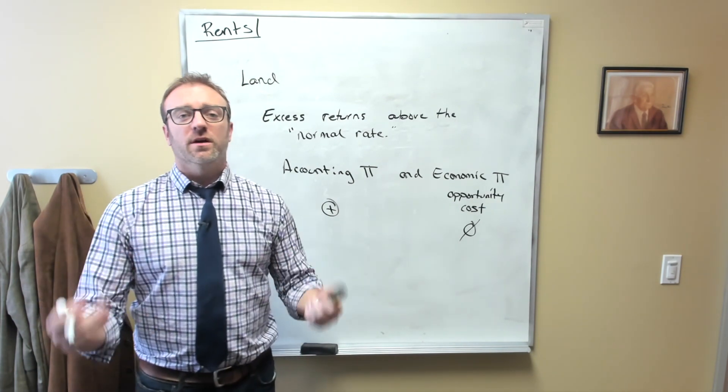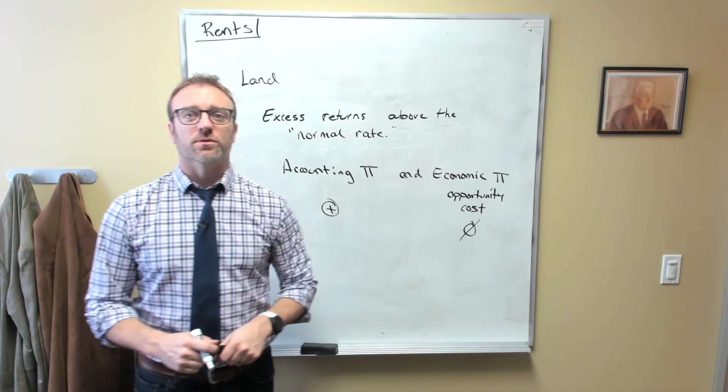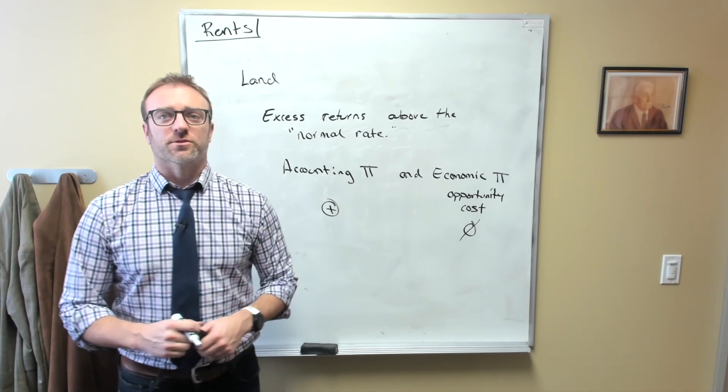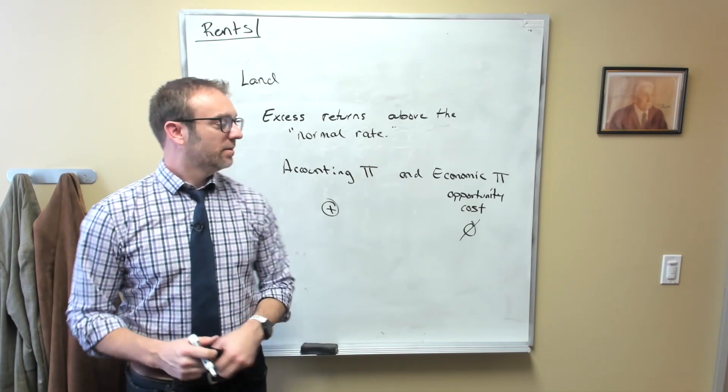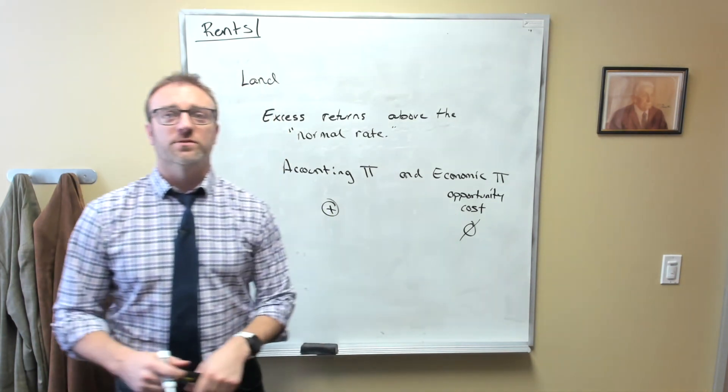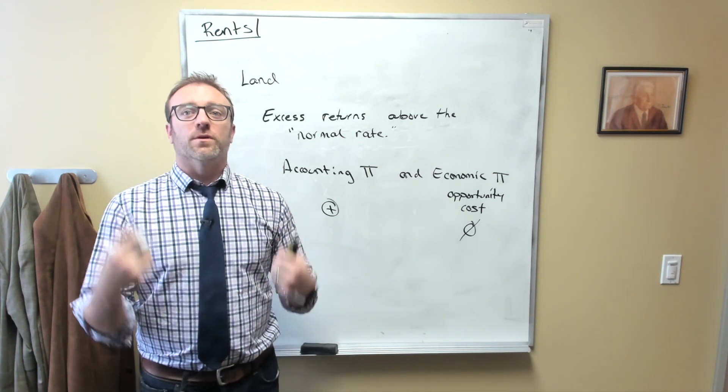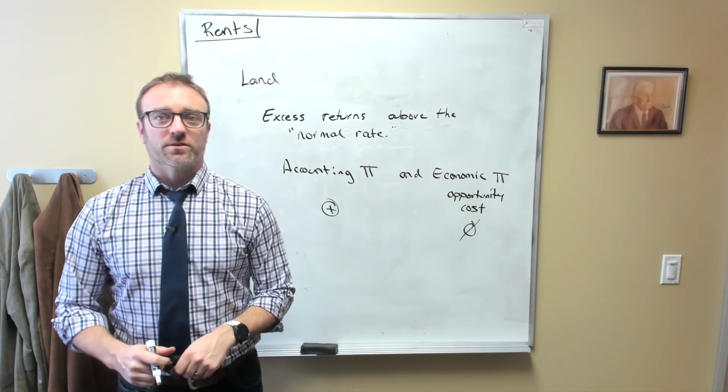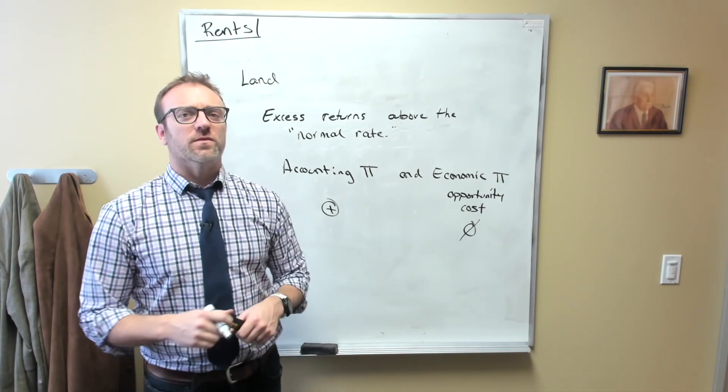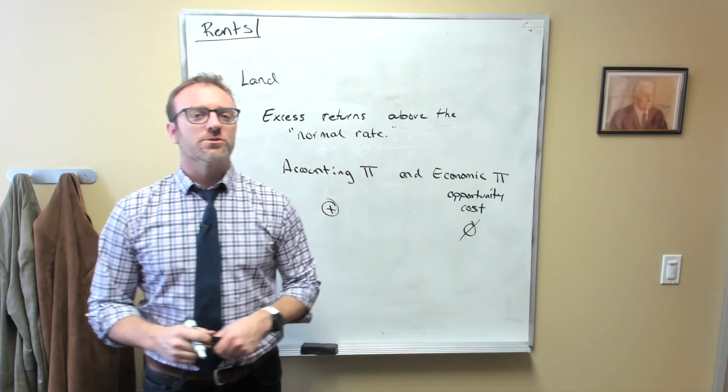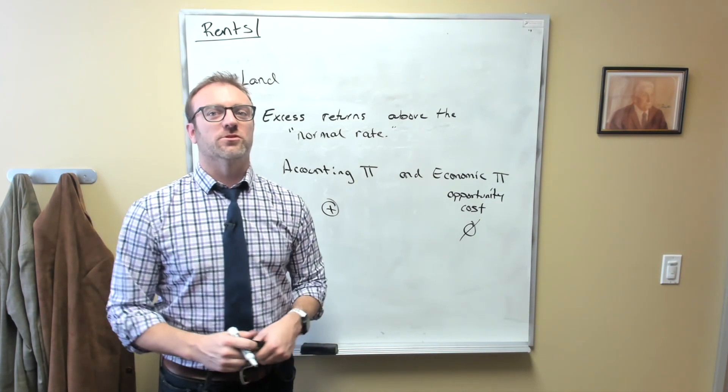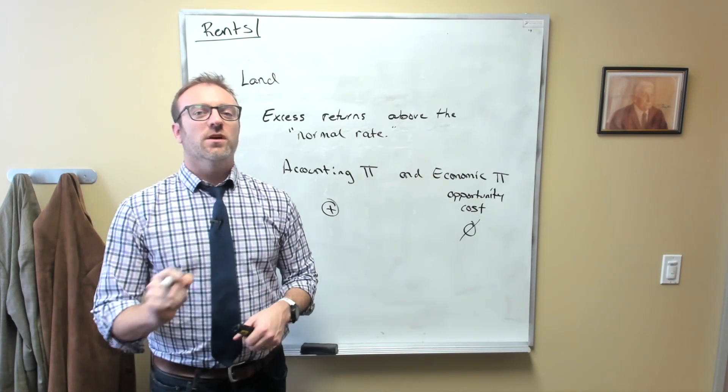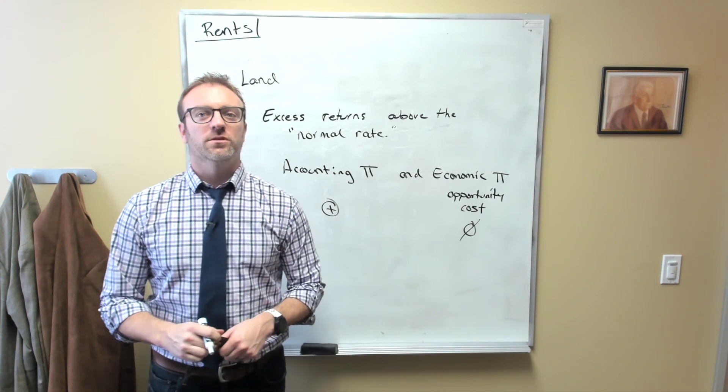However, in other situations, this isn't true. So for example, my wife is a surgeon. If she wasn't a surgeon, her next best alternative, also known as her opportunity cost, is something that would earn far less than being a surgeon. Because of this, we can think of a large portion of my wife's salary as being a rent.